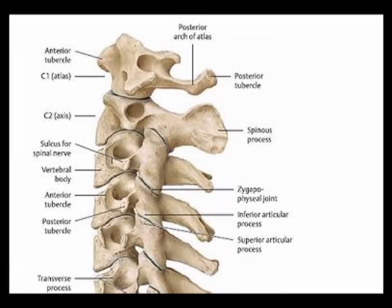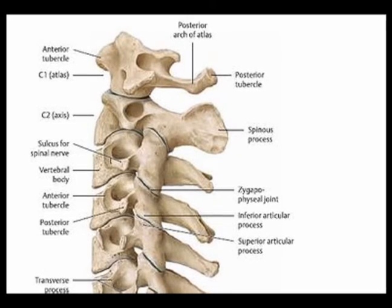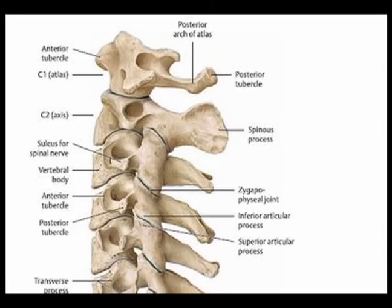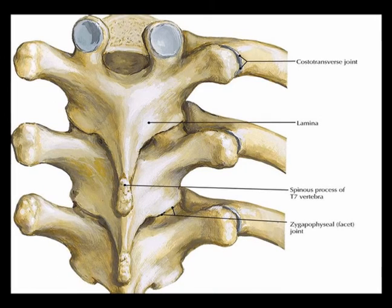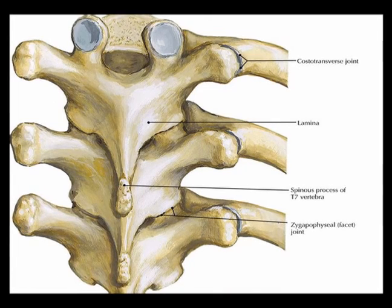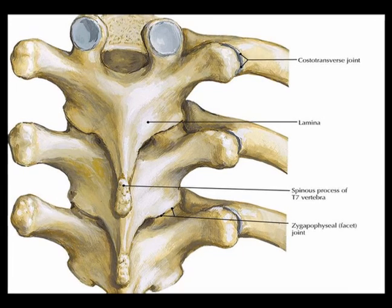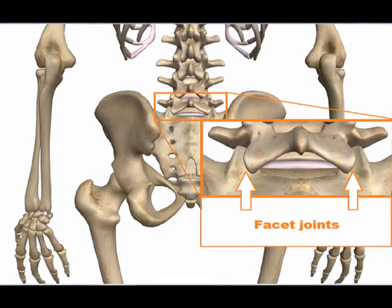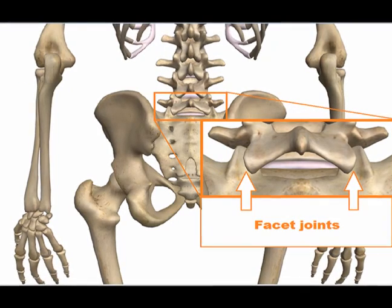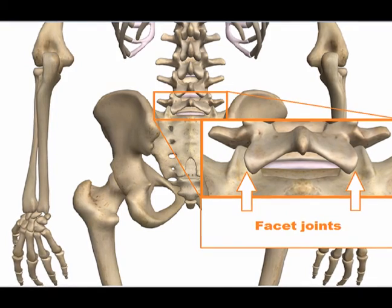So again, in the cervical spine, the facet joints are inclined to approximately 45 degrees from horizontal. In the thoracic spine, the facet joints are oriented approximately 60 degrees from horizontal and are also rotated roughly 20 degrees in the axial plane. In the lumbar spine, the facet joints are inclined to a nearly vertical orientation. Thank you.